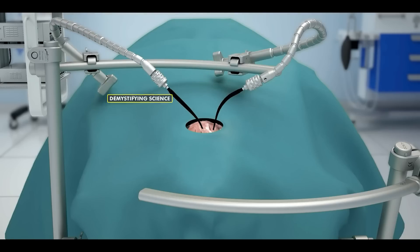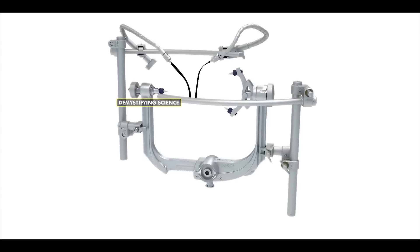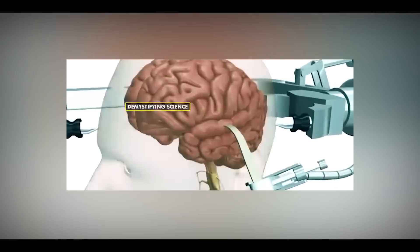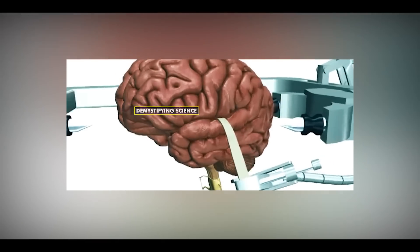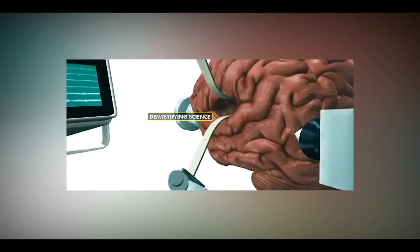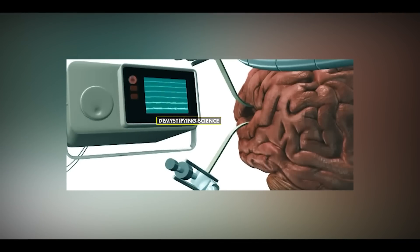Nowadays, a tubular retractor system is also used during craniotomy. It moves through the white matter, gently pushing brain tissues aside without damaging them, making access to the tumor easier and allowing for its removal.